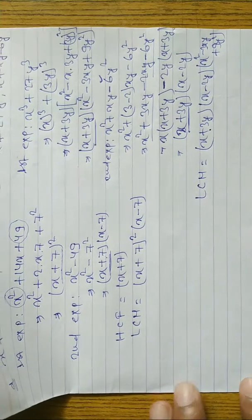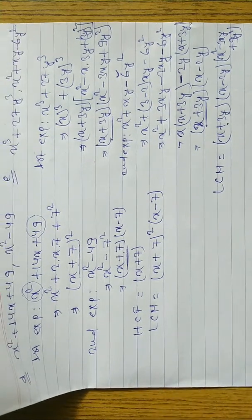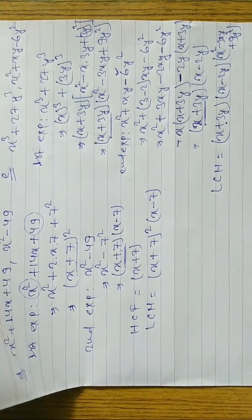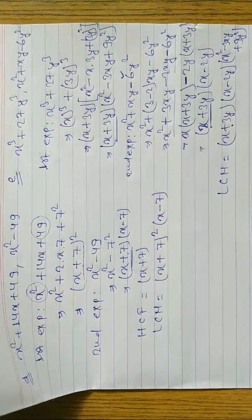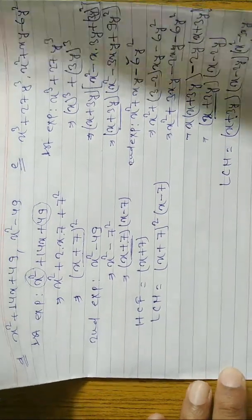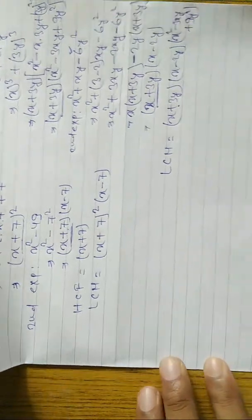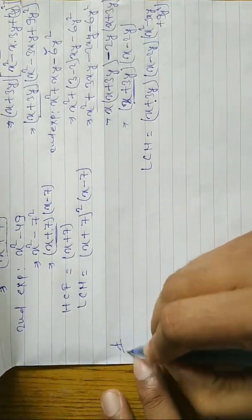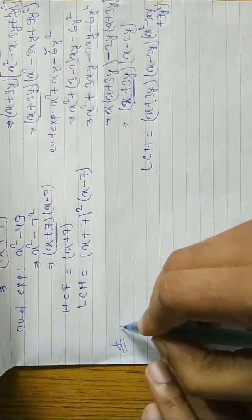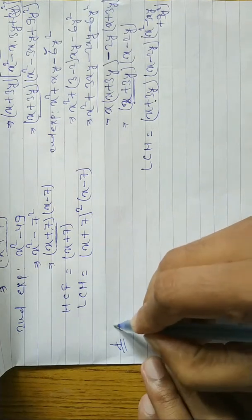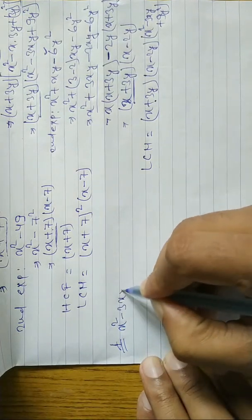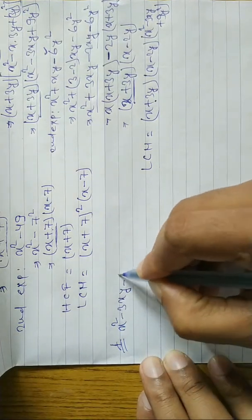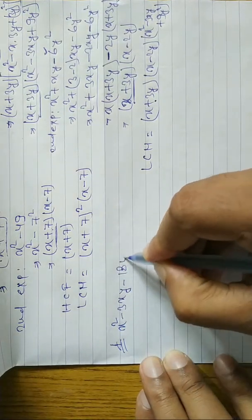Now look at question 2f, which is a very interesting question. The expressions are x² - 3xy - 18y² and x² - 8xy + 12y².